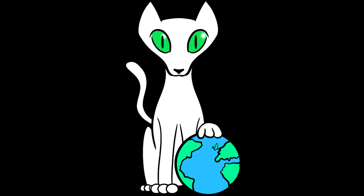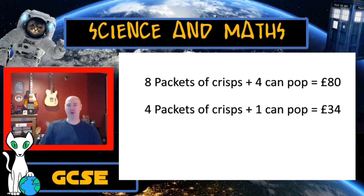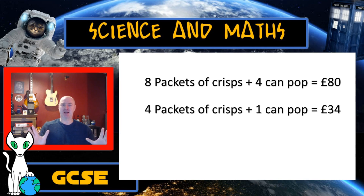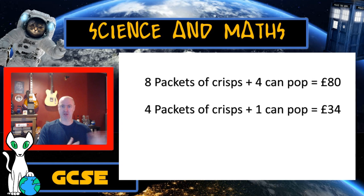One can of pop must therefore equal £6. What? Not £7? No — 12 divided by 2 is £6. You must have done it wrong. So now I know what one can of pop equals: £6, which is pretty expensive.